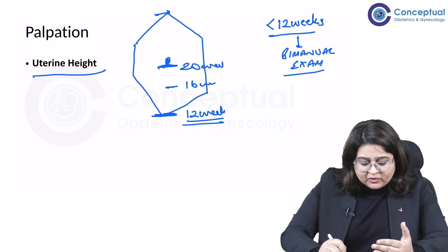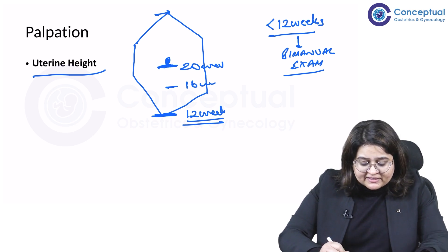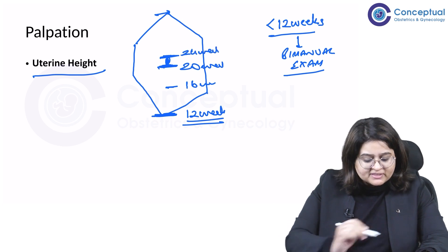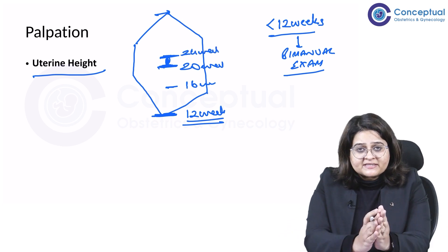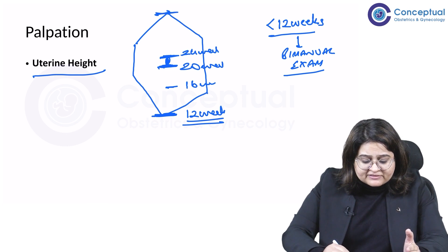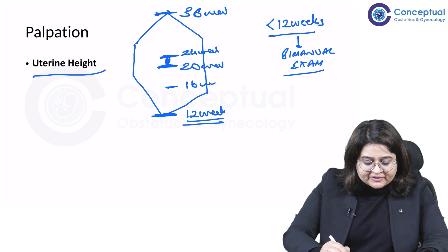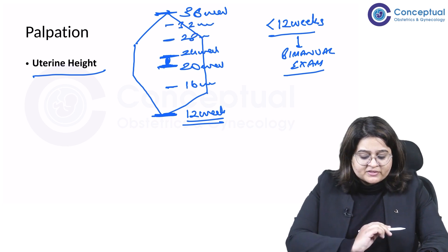It is at the lower border of the umbilicus at 20 weeks. In between, around 16 weeks, it's midway between the umbilicus and the pubic symphysis. It is at the lower border of the umbilicus at 20 weeks, at the upper border of the umbilicus at 24 weeks.